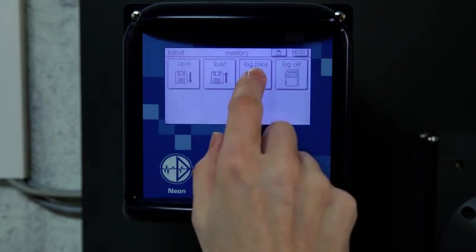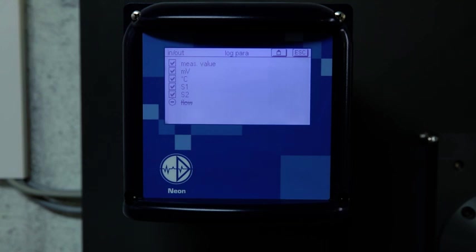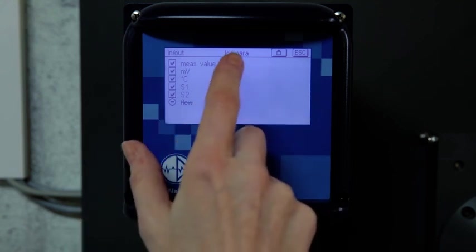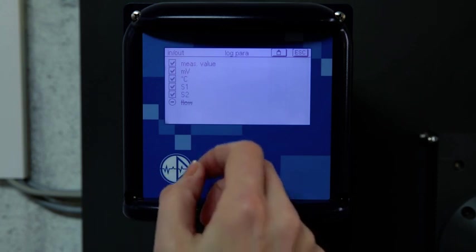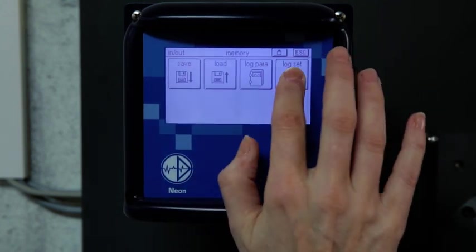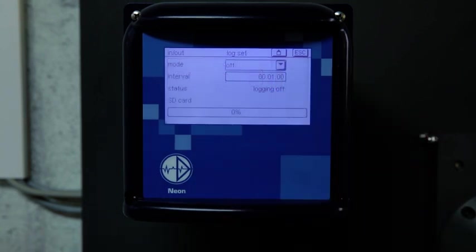The SD card function can be used as data logger. You can select the parameters to be logged: Measurement value, raw value of measurement value, temperature, and the two controller outputs. The logging interval can be selected freely.